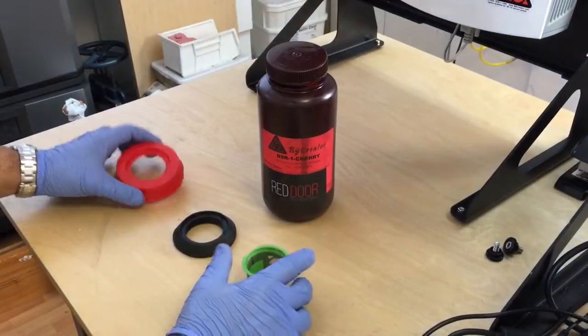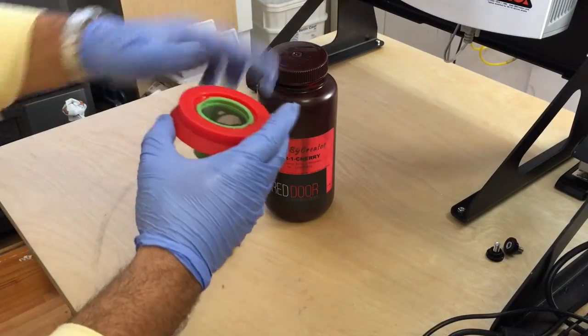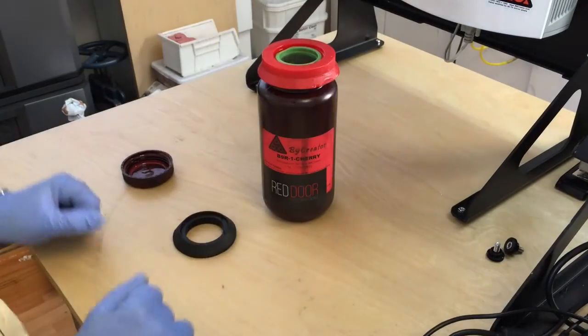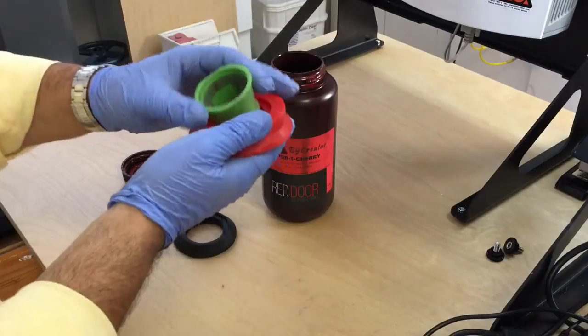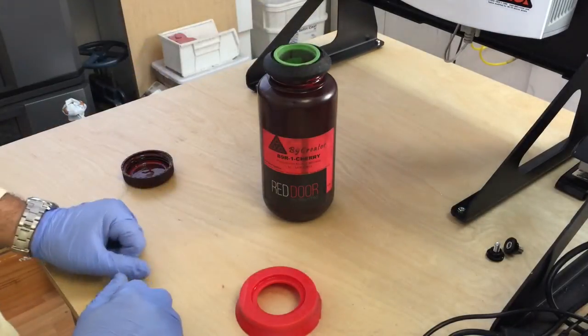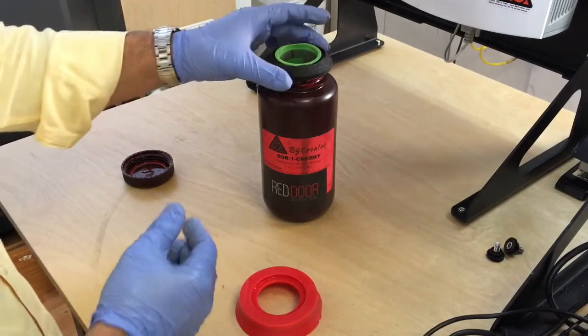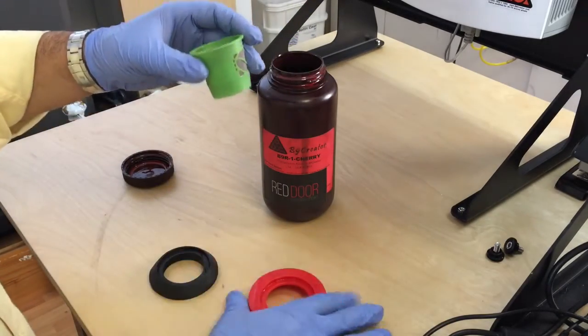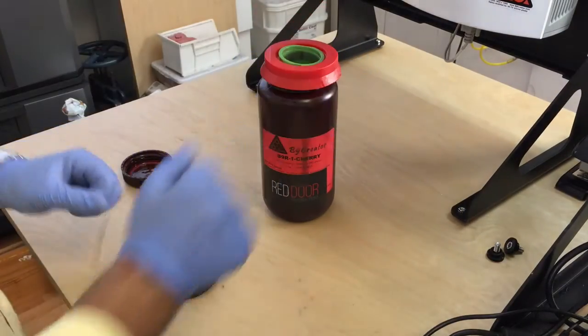If you guys are interested in our filter holders, shoot me an email and we can send you the file that you can print out your own. This just makes it very simple, very easy to filter your resin without making a mess. A lot of the strainers that are out there are a little bit on the larger side so we just like using these. It just makes our lives a little bit easier.